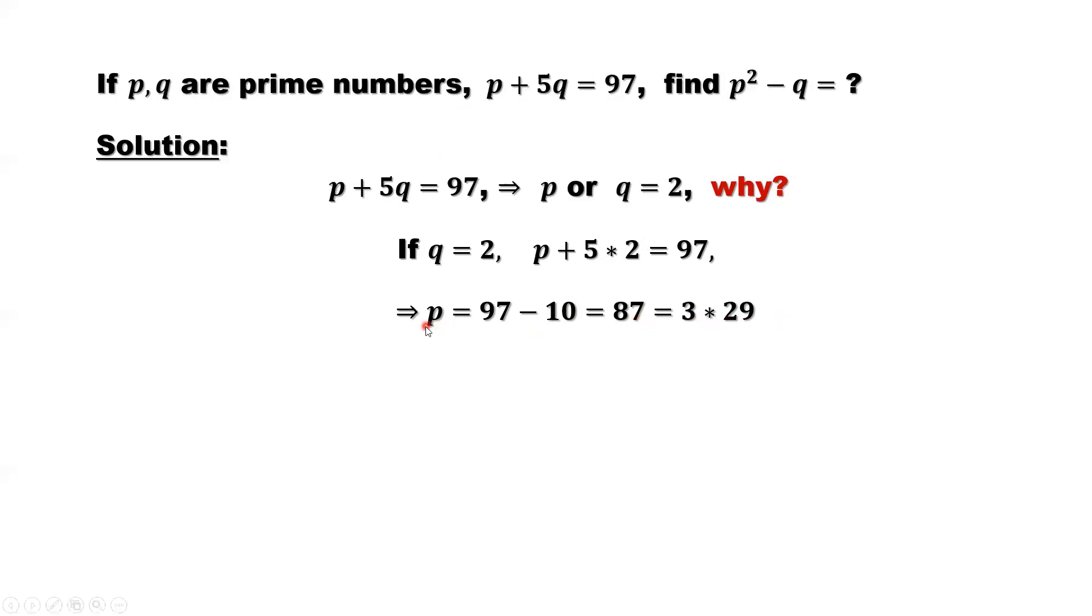p can rewrite as 3 times 29, implies p is not a prime number. This is a contradiction about the given condition. So here, it is impossible. p is a prime number, so it cannot be this number, 3 times 29. So q equals 2 is not true.